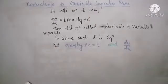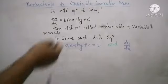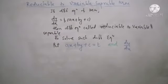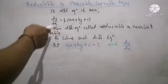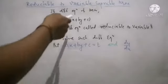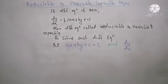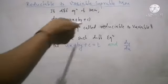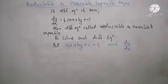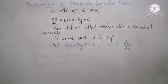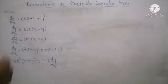Equation reducible to variable separable form: if a differential equation is of the form dy by dx equals f of ax plus by plus c, then such a differential equation is called reducible to variable separable differential equation. In this type, the function contains a linear term of x and y. To solve such a differential equation, we substitute only the linear term of x and y, and replace the operator dy by dx, to reduce it to variable separable form and get the solution.